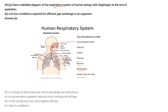List four conditions required for efficient gas exchange in an organism: a large surface area for exchange; a concentration gradient without which nothing will diffuse; a thin surface across which gases will diffuse; and warm conditions.